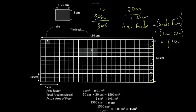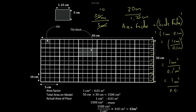Squaring gives you 1 square centimeter over 0.1 squared meters squared — which equals 1 square centimeter over 0.01 square meters. So it reads: 1 square centimeter is to 0.01 square meters. That is how you arrive at the area factor.